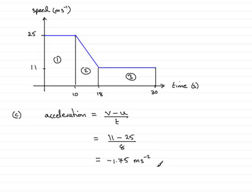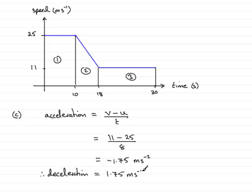Don't leave it here though, because it did ask for the deceleration. So therefore the deceleration is basically given by just the 1.75 — strip off the minus. So the deceleration is 1.75 meters per second per second. And that brings us now to the end of part C and to the end of this question.